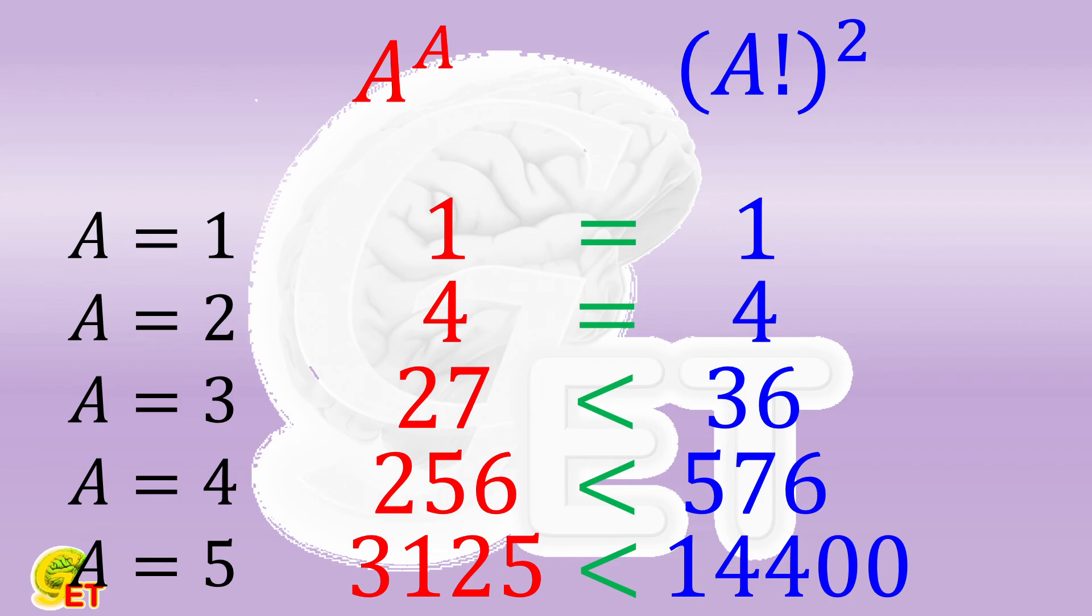Everyone sees that although when A becomes bigger, A to the A power increases rapidly, but the square of factorial of A increases even faster.